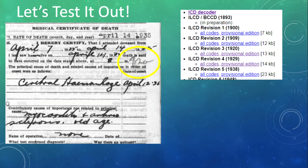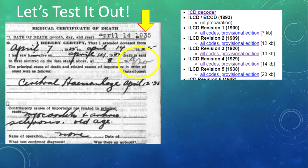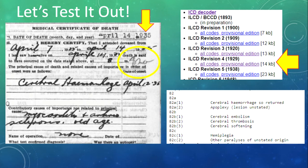Let's test out how the ICD works with that 82A. Our cause of death looks like it's a cerebral hemorrhage. The most important thing to remember is you don't want to use a revision that is past the date of your death. We have 1935, so we won't use revision number five from 1938 — we go back one and use revision number four from 1929. When we pull up that book and browse to 82A, we find cerebral hemorrhage as the cause of death, which matches what's written on the document.